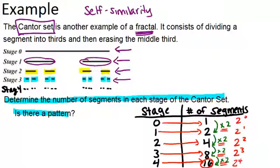So what that means is that the number of segments in each stage is 2 to the power of the stage number. So if you notice in stage 0, there's 2 to the 0 segments. In stage 1, there's 2 to the 1 segments.